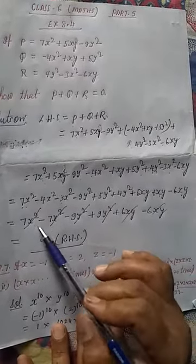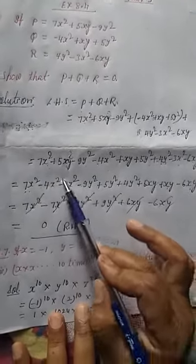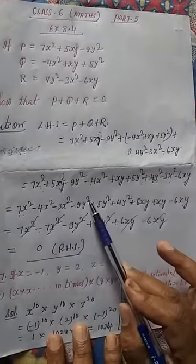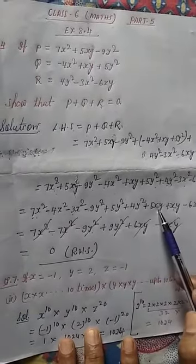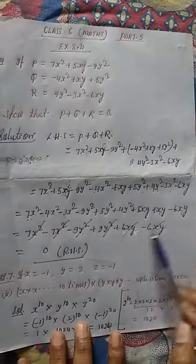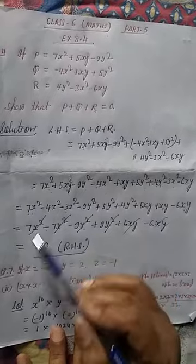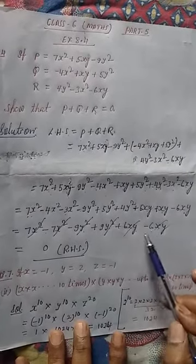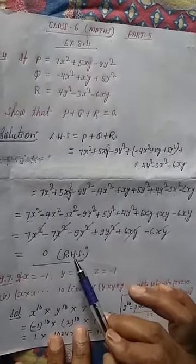After arranging like terms, we simplify. 7x squared minus 4x squared minus 3x squared gives minus 7x squared. Minus 9y squared plus 5y squared plus 4y squared gives plus 9y squared — wait, that gives 0. Plus 5xy plus 1xy gives 6xy and minus 6xy. So plus 7x squared and minus 7x squared cancel. Minus 9y squared and plus 9y squared cancel. Plus 6xy and minus 6xy cancel. After canceling, we get 0. This is equal to RHS.